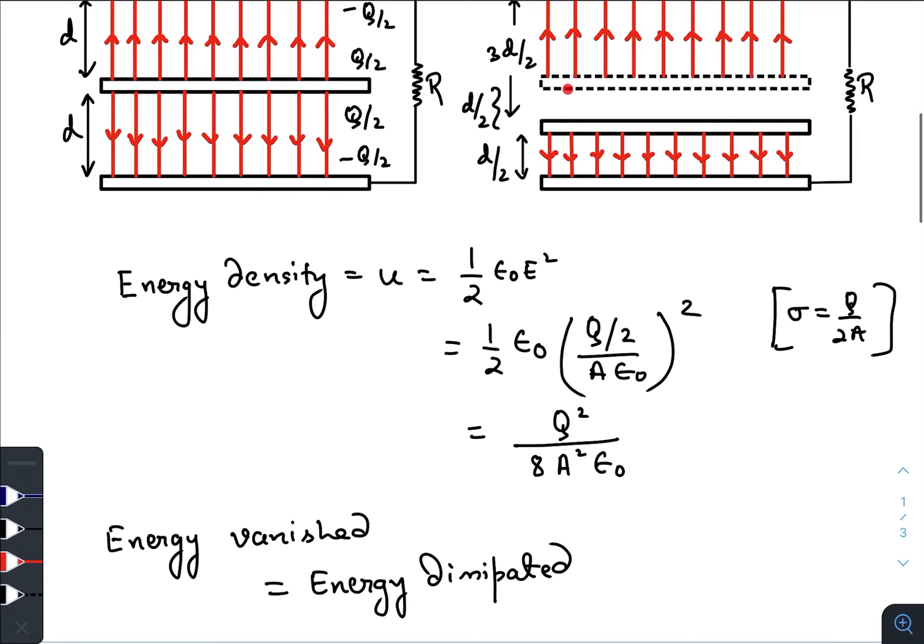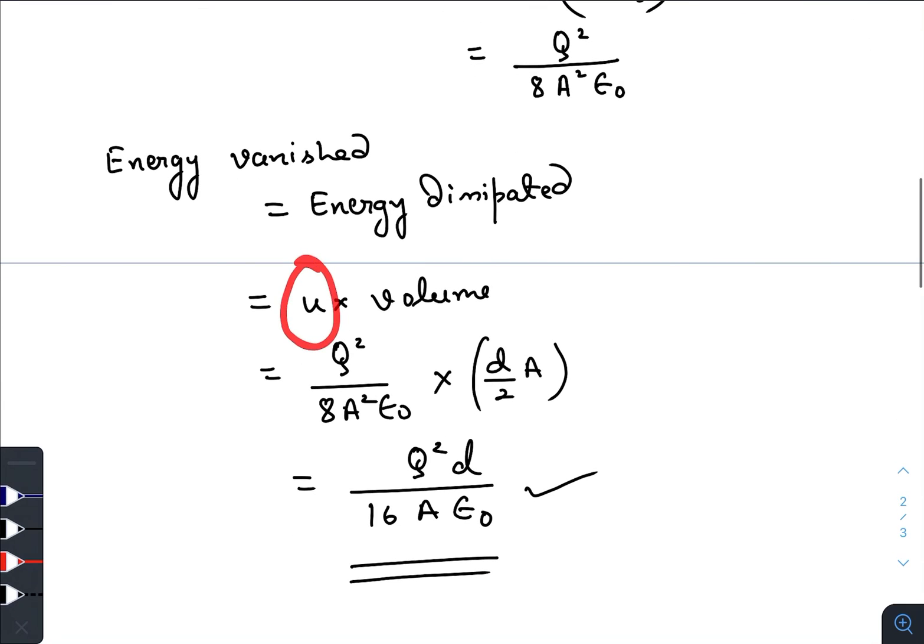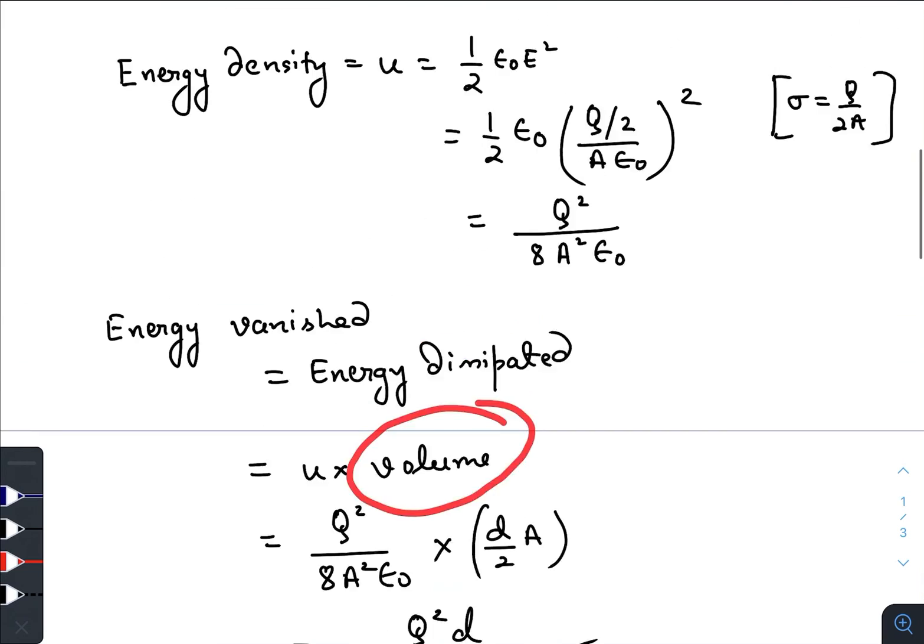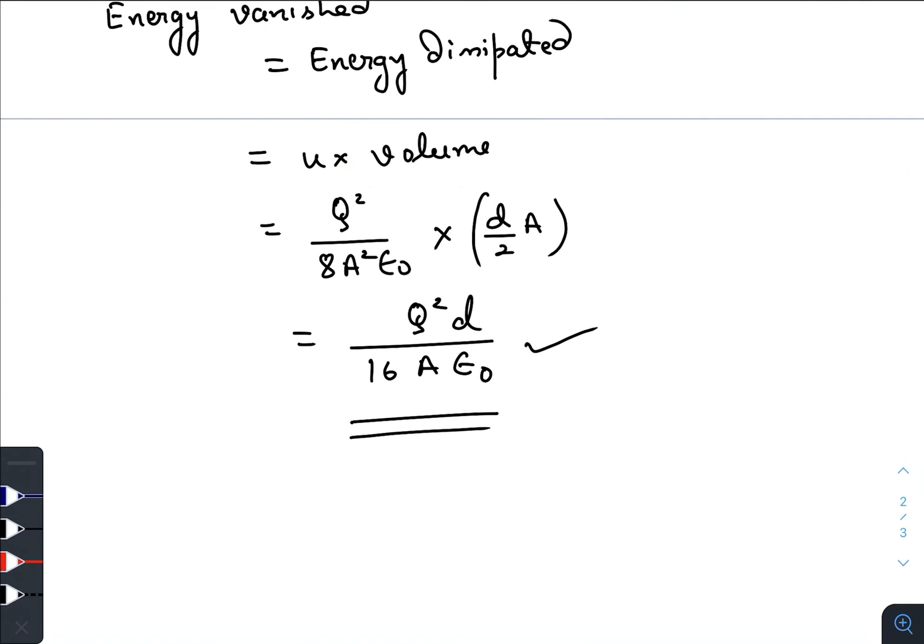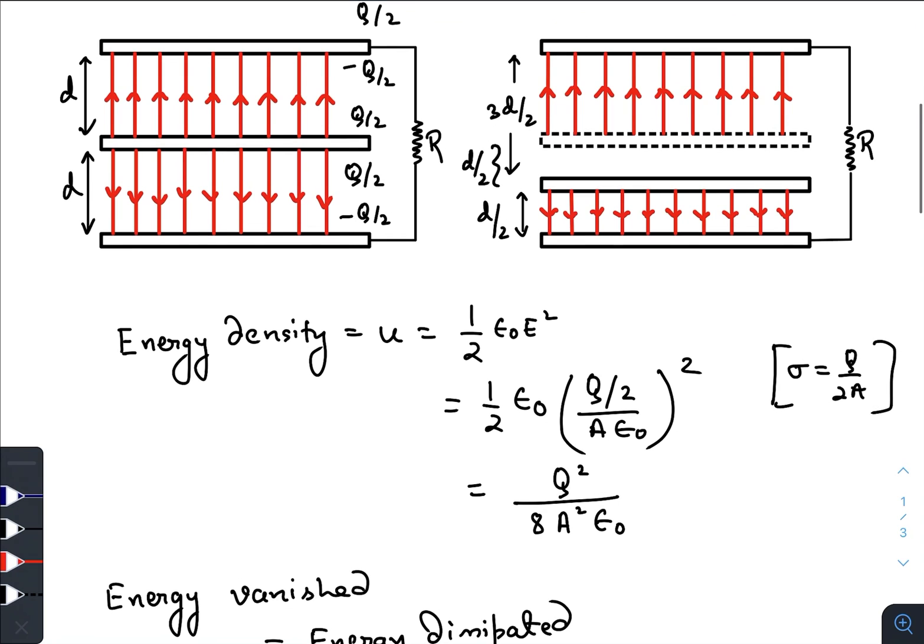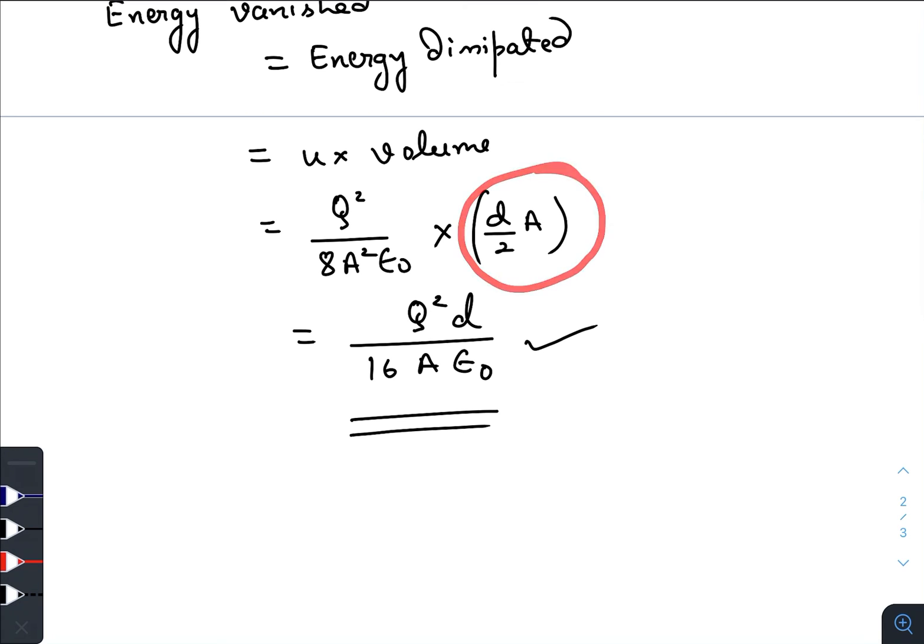The energy associated with the electric field that were present in this region is energy density times the volume, this vacant volume. That volume would be D by 2 times the cross sectional area. So the total energy that has been dissipated through the resistance is this one.